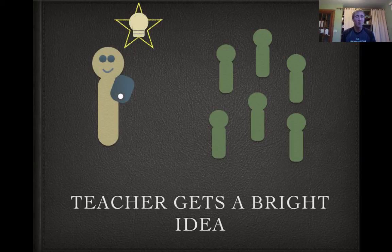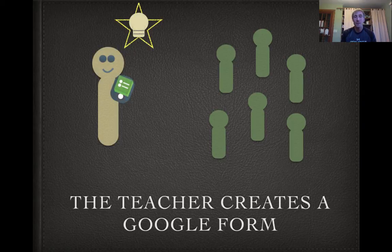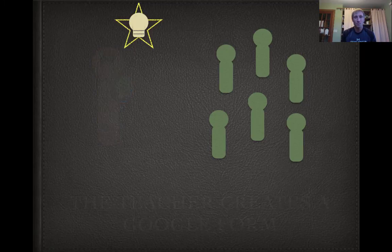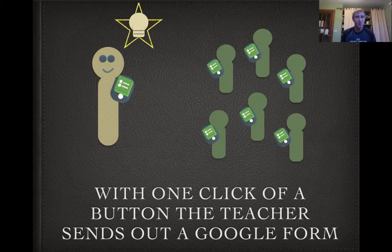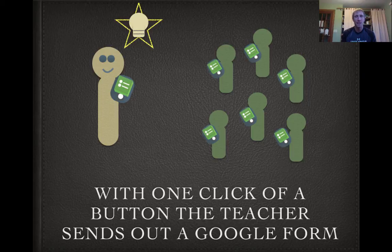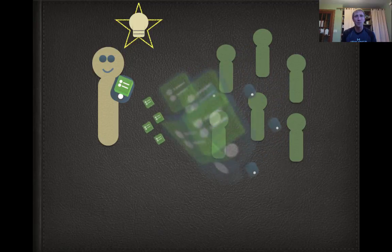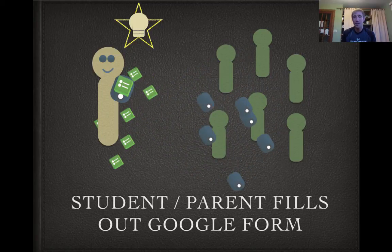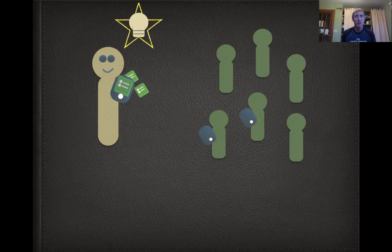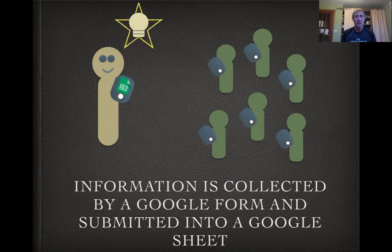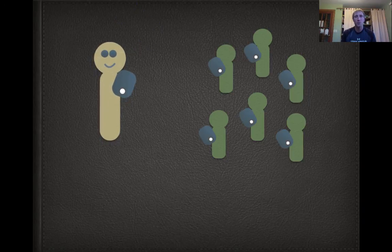The teacher creates a Google Form. With one click of a button, the teacher sends out a Google Form to all of their students. I do like using this in small groups — I've got six iPads in my class, so it's easy to rotate through stations when collecting data. The student, parent, or client fills out that Google Form, the teacher collects all that information, and it's submitted into what's called a Google Sheet.